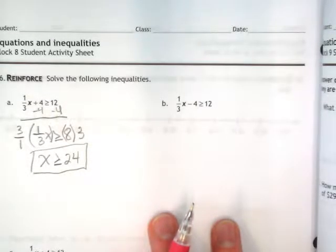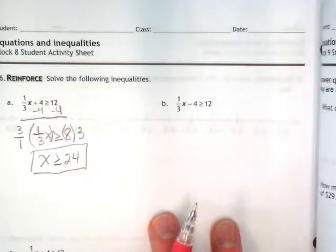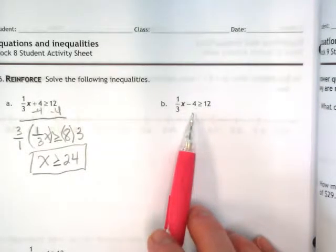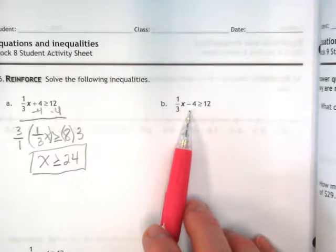All of these problems, if you notice, have the same numbers, but the negatives are in different places, which is what makes them a little bit challenging. Over here, I'm looking, what can I add or subtract, and I have a negative 4, so that means I'm going to add 4.